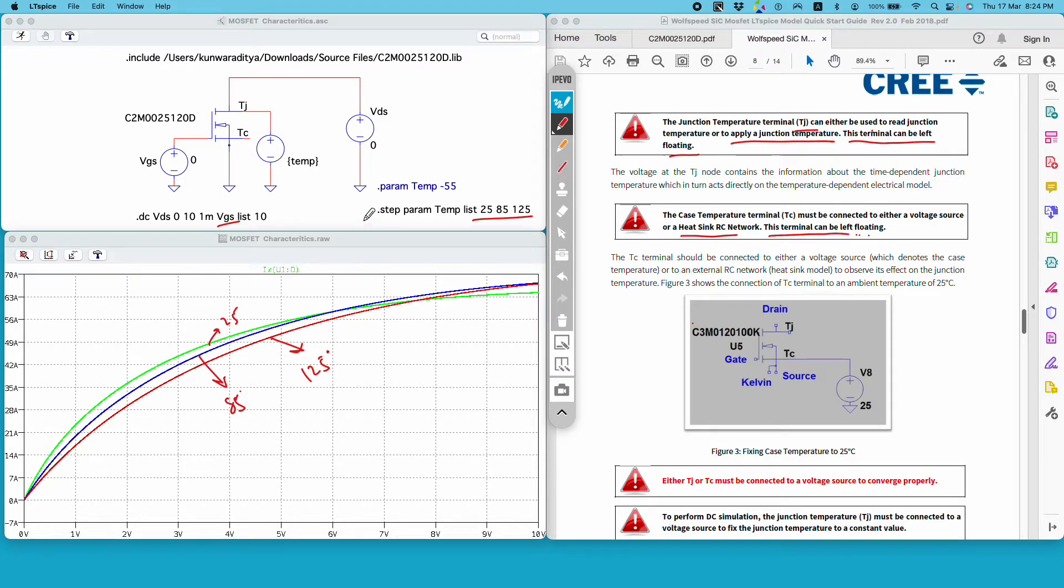So for one particular value of VGS I am plotting the same curve for three different temperatures. So if your LTSpice model has thermal behavior coded in you can study the effect of temperature on the characteristics of the MOSFET.